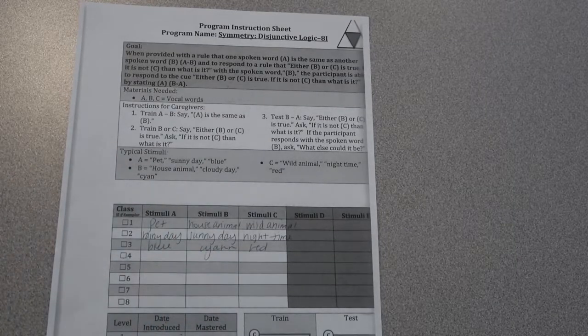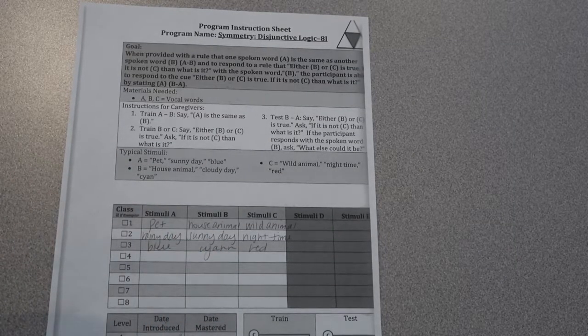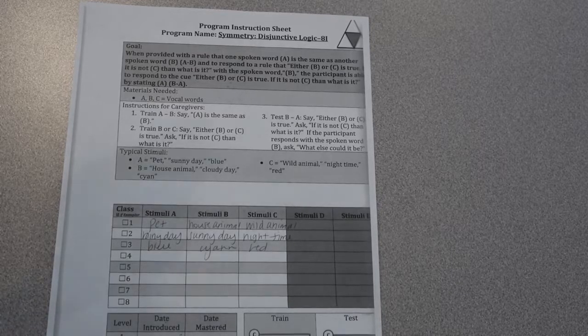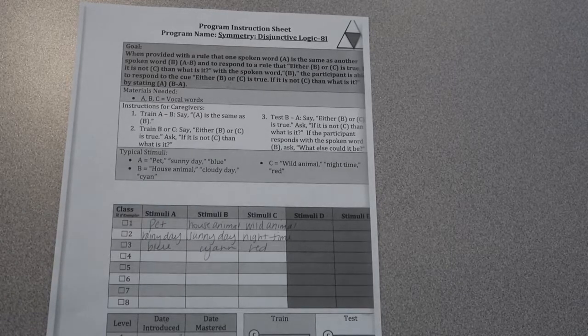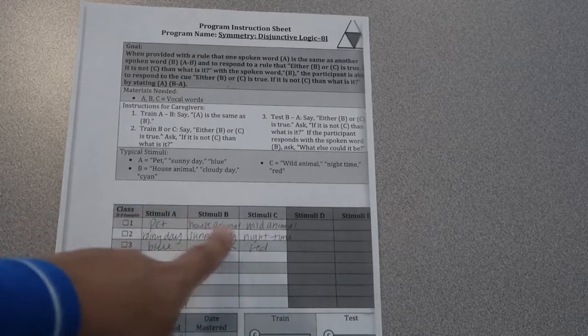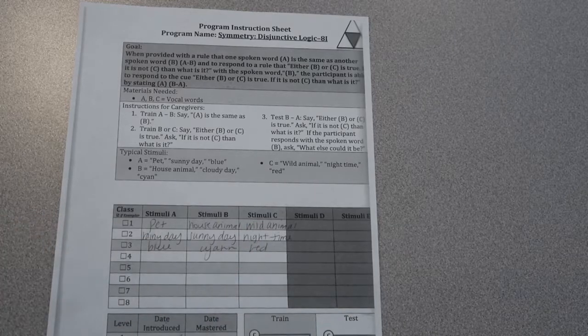Then your next block is going to be your train. You're going to train B or C, so you're going to say either house animal or wild animal is true. If it is not wild animal, then what is it?